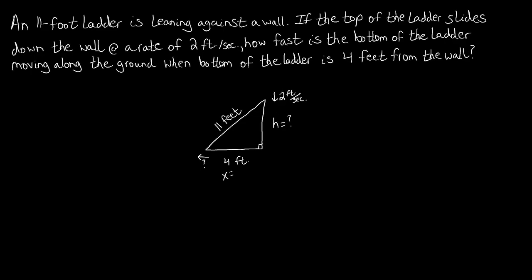We also have the rate of change of 2 feet per second — the ladder is sliding down the wall. We'll call this dh/dt, the change in h with respect to time. The height is actually decreasing, so we're going to say dh/dt equals negative 2 feet per second. Using positive 2 would imply the height is increasing, which contradicts our diagram.